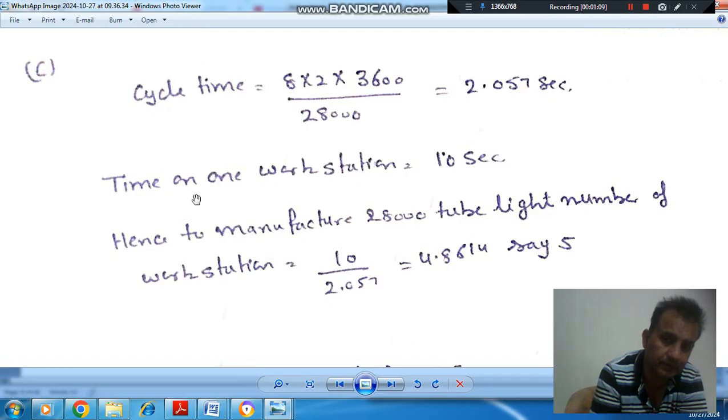And time on one work station is 10 seconds to perform all the tasks. So number of work stations required to produce 28,000 tube lights is 10 divided by 2.057. That is 4.8614, or say 5 work stations are required to complete the 28,000 tubes in two shifts.